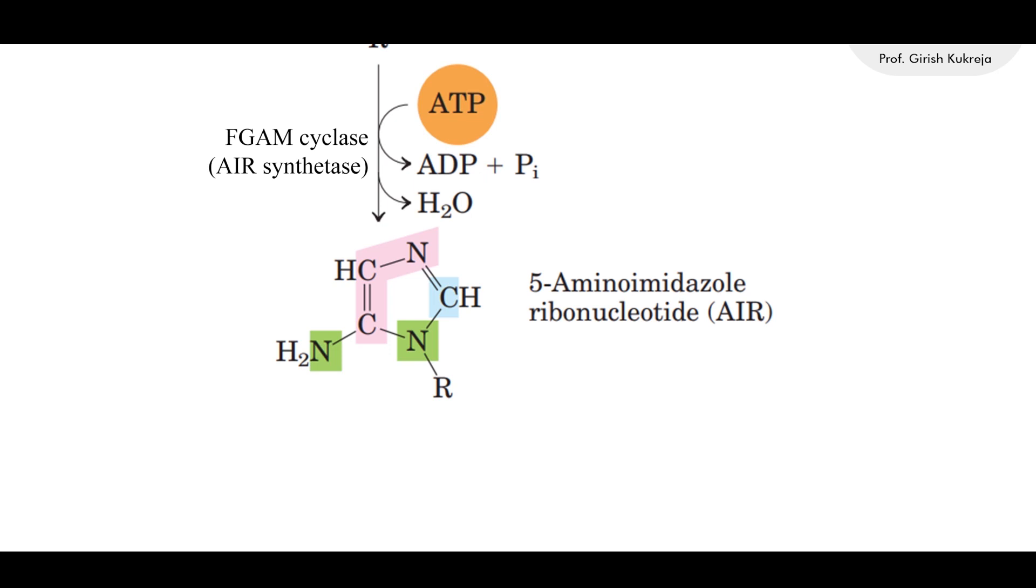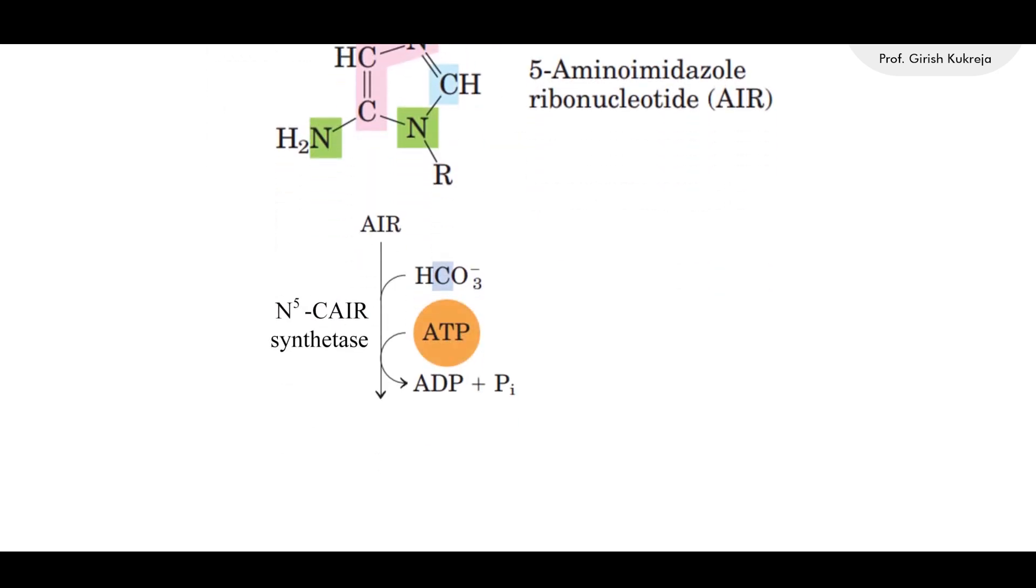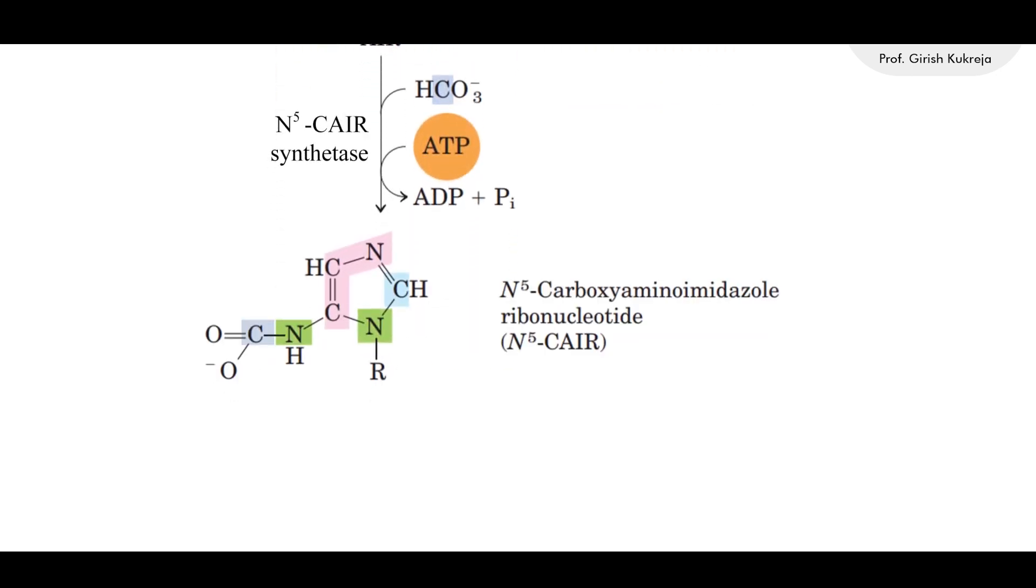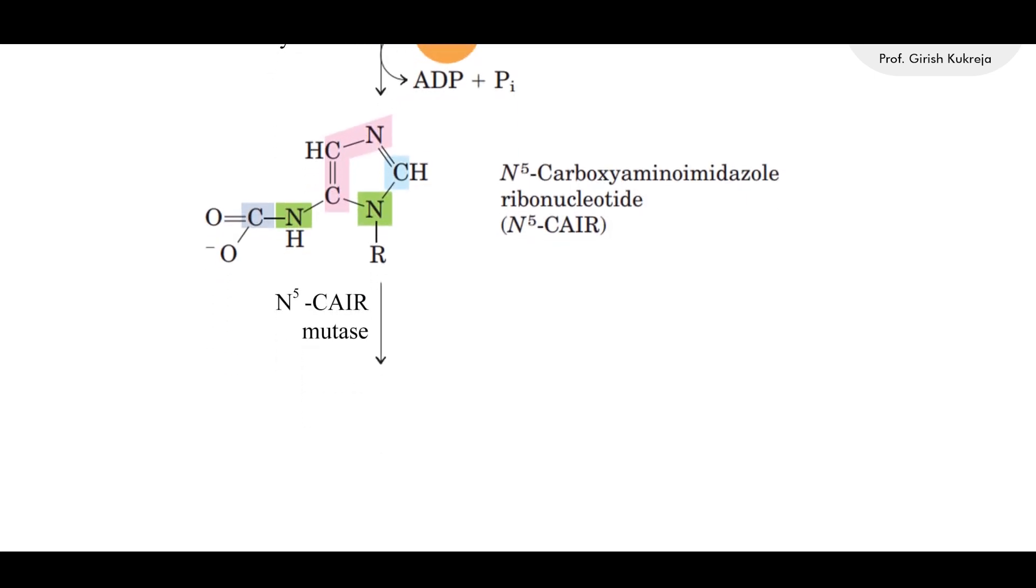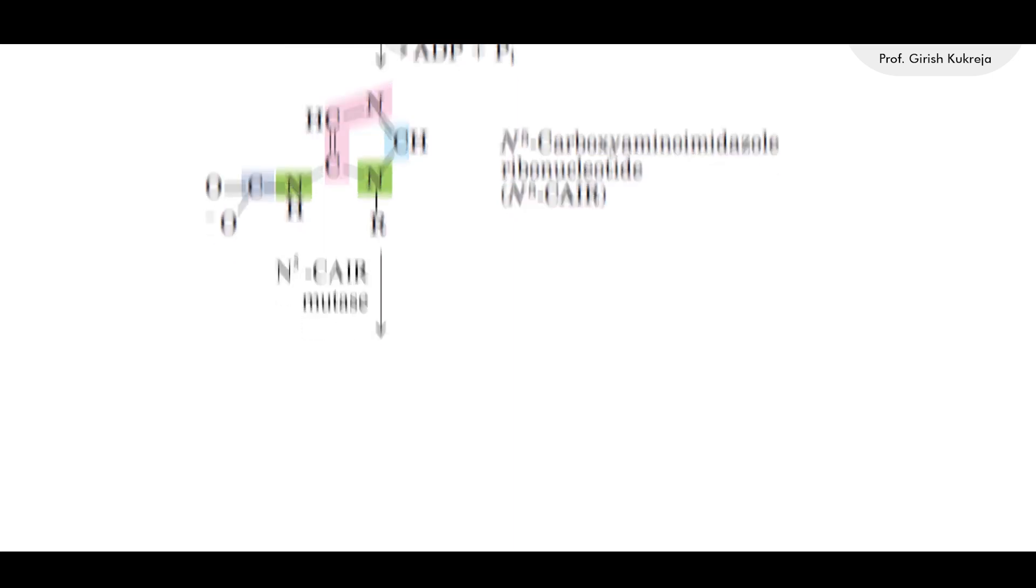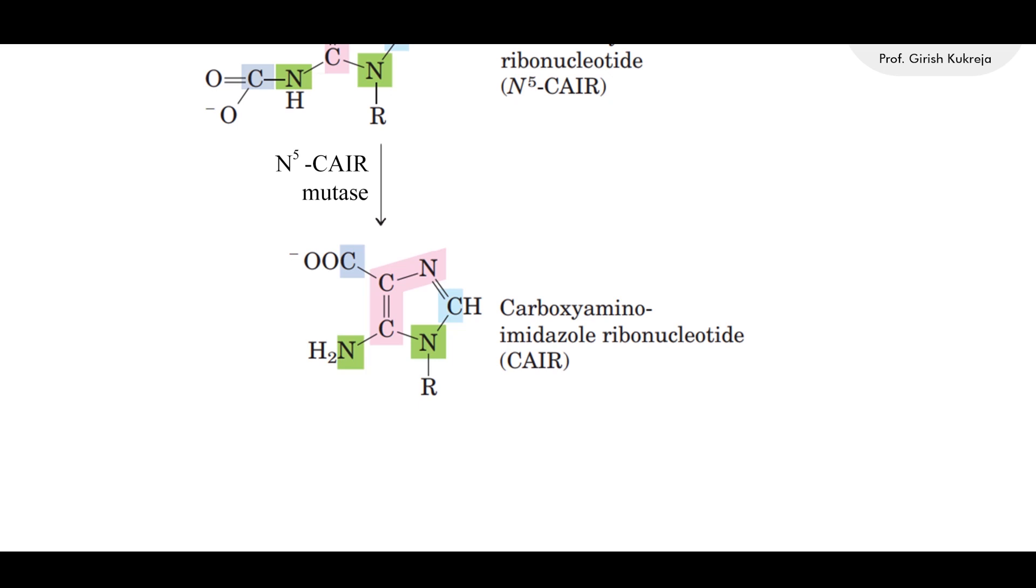Up till now, we have three atoms of the six which are needed for the second ring of the purine in their place. For the next three atoms, the carboxyl group is added without biotin and from bicarbonate with ATP hydrolysis to form N5-carboxyaminoimidazole ribonucleotide, N5-CAIR. The atoms are rearranged, transferring carboxylate from the exocyclic amino group to the fourth position of the imidazole ring, forming carboxyaminoimidazole ribonucleotide, CAIR.